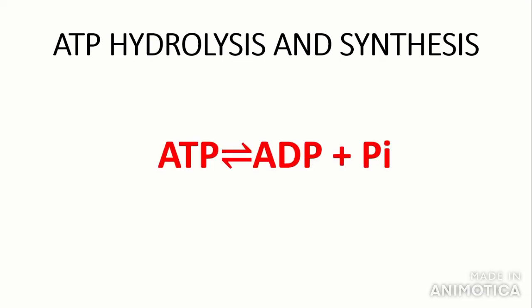You also need to know about ATP hydrolysis and synthesis. This is the equation that is absolutely essential to know — it often comes up in the exam. ATP can be hydrolyzed, which is the forward reaction, to ADP — adenosine diphosphate — meaning a phosphate is lost. We use the symbol Pi for the phosphate because the phosphate here is inorganic. The forward reaction is a hydrolysis reaction, which means the breaking of chemical bonds using water, so water is used, not released.